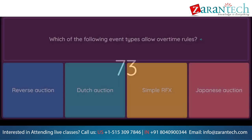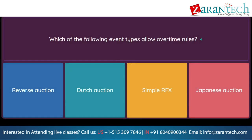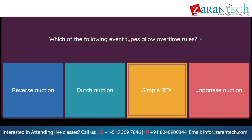Question: Which of the following event types allow overtime rules? Option 1: reverse auction. Option 2: Dutch auction. Option 3: simple RFX. Option 4: Japanese auction.